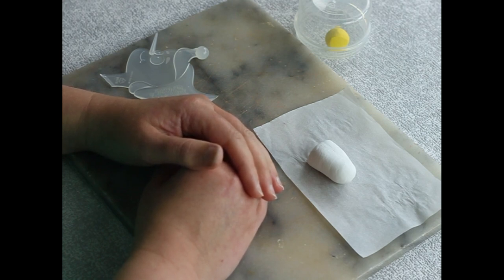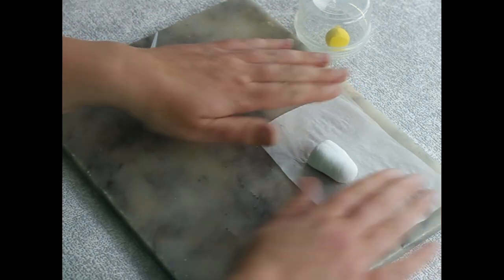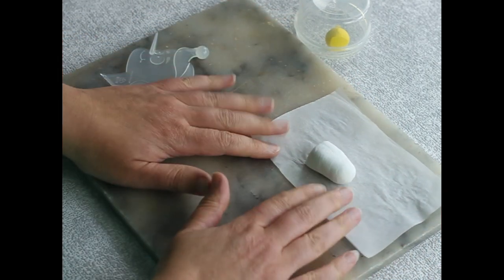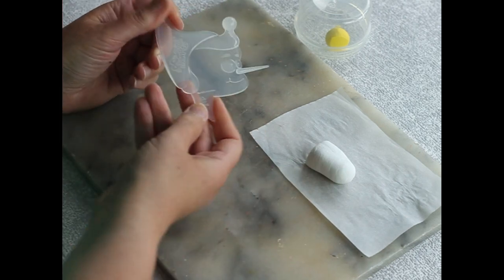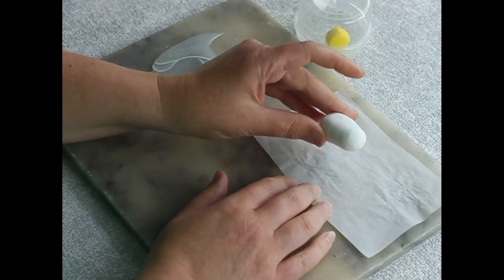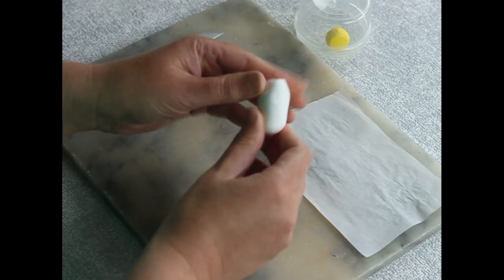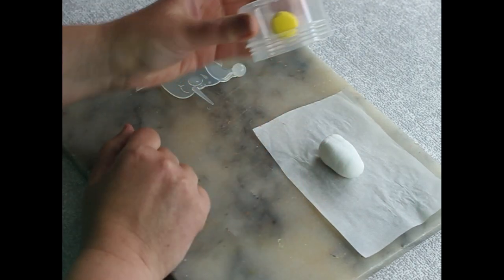So, to make the daisies what do we need? We need a work surface, some greaseproof paper, nice and non-stick, and I've got a jumping clay tool - they call it a Pinocchio tool because it looks like Pinocchio's head. You'll also need some white clay, this is about 2 or 3 grams, and you'll also need about a gram of yellow clay.